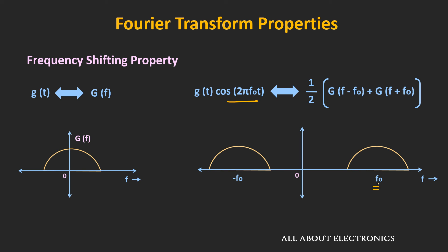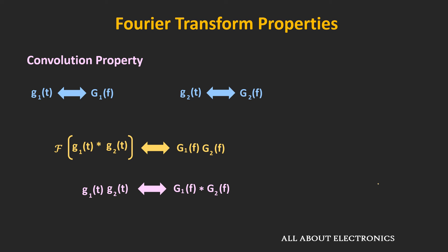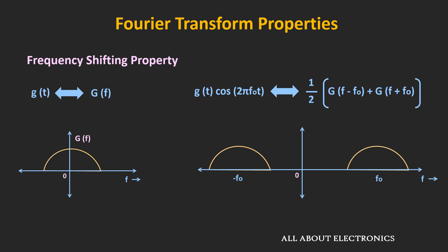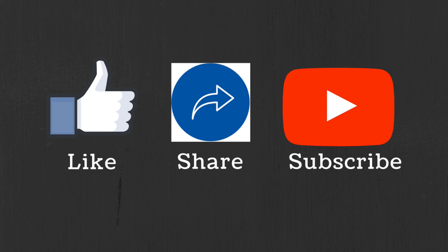Finally, the convolution property states that time convolution of two signals becomes multiplication in the frequency domain, and multiplication of two signals in the time domain becomes convolution in the frequency domain. These are some of the useful properties of the Fourier transform. In the next video, we will discuss amplitude modulation, where the frequency shifting or modulation property will be very useful. If you have any questions or suggestions, let me know in the comments. If you liked this video, hit the like button and subscribe for more such videos.